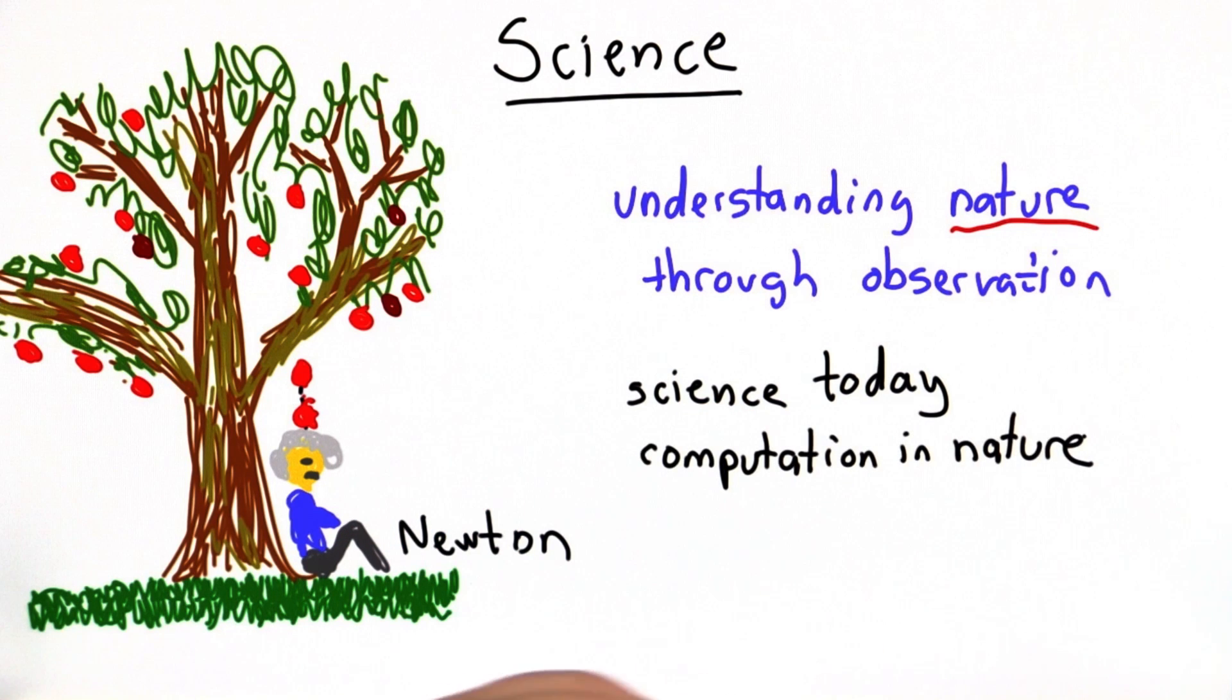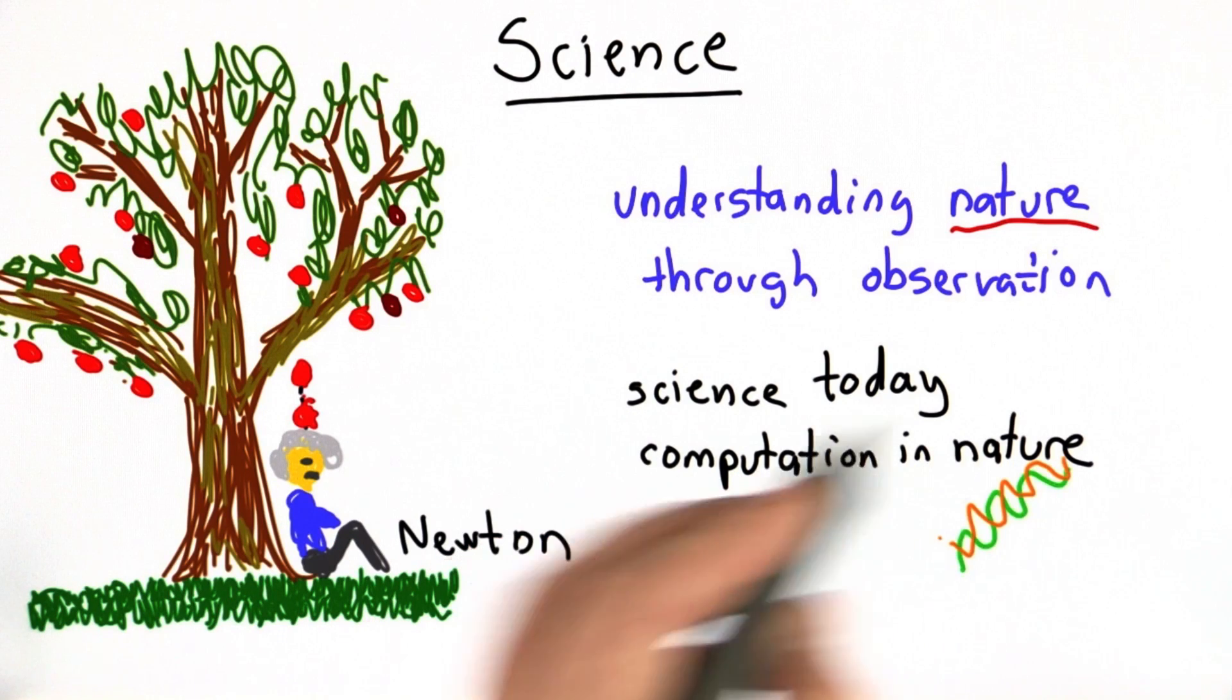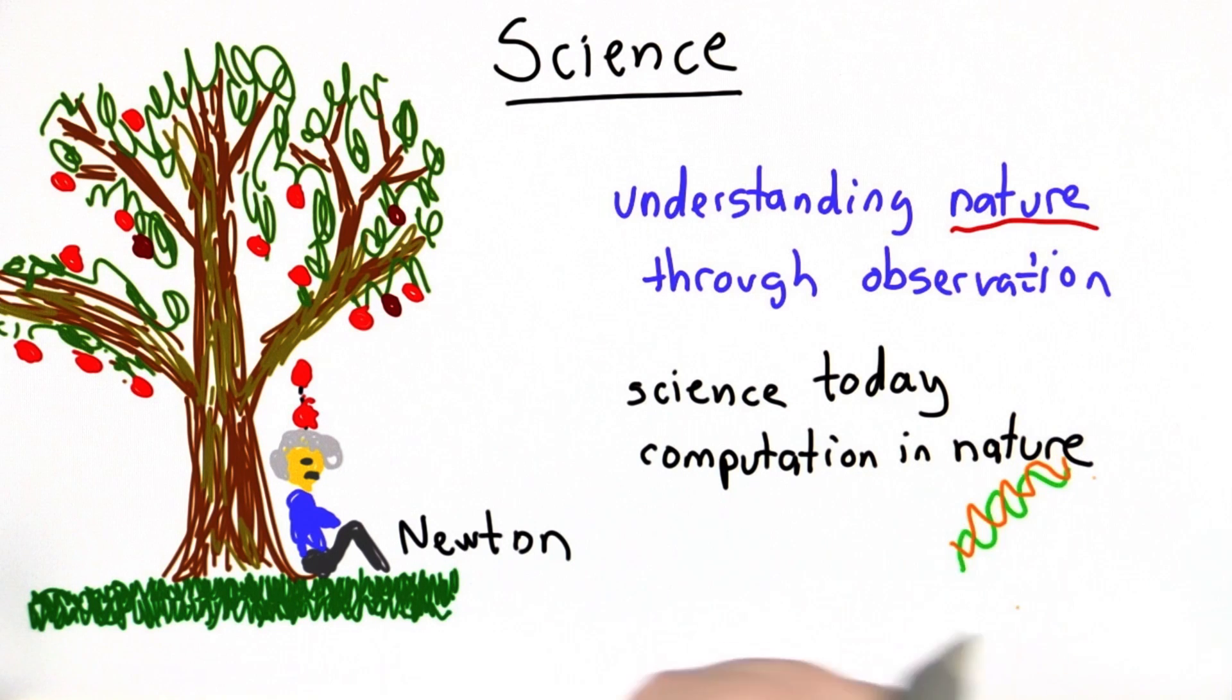But there is a lot of computing in nature. Certainly physical processes involve computation. The other big example today is really in biology. If you think about DNA as programming organisms, it's a very complex way of programming, but it's also very computational. And if you think about biology, biology is really all about computation today.